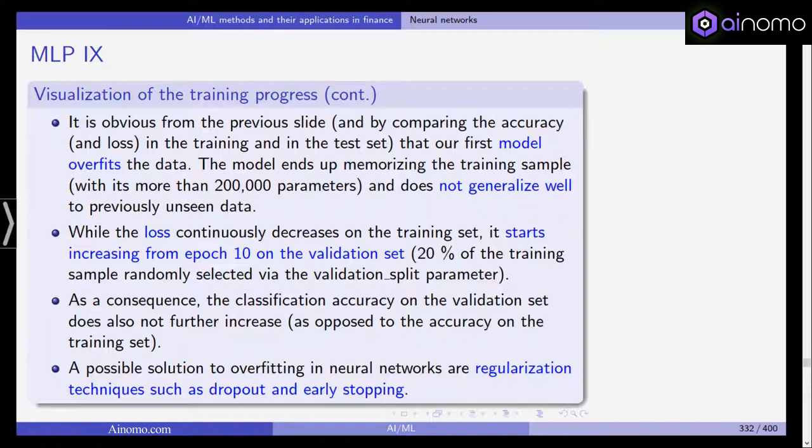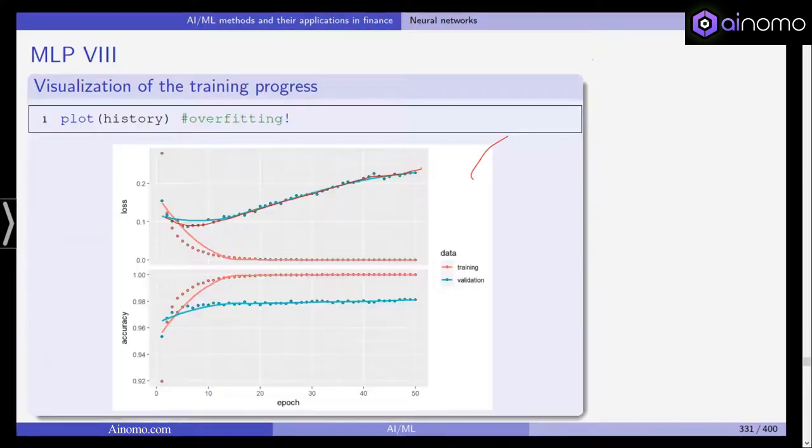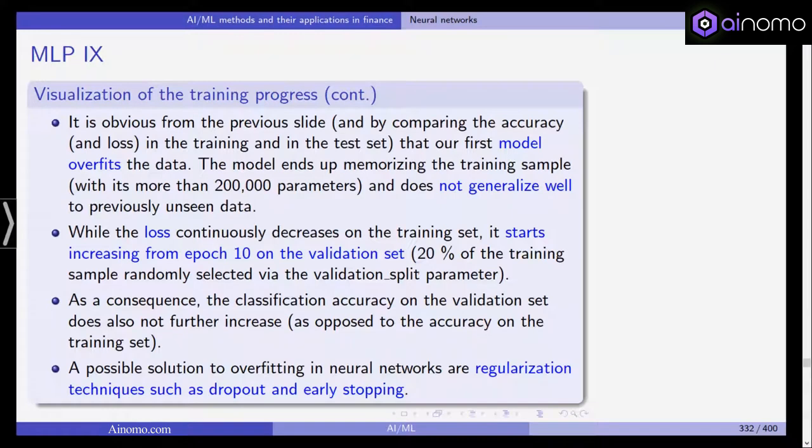As a consequence, the classification accuracy on the validation set does not further increase. For the training set it's close to 100%, but not for the validation set. You can see the accuracy doesn't really increase anymore after this point in the validation set. A possible solution to overfitting in neural networks is regularization.